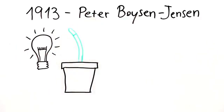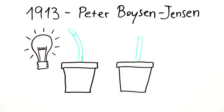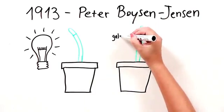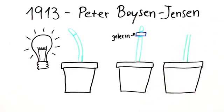So he then did the following experiment. He cut off the tip and put it back on the plant, but before he put it back, he put a slice of gelatin on the stalk and then put the plant tip back on it. In the second plant, he put a piece of mica, a piece of glass, between the stalk and the tip.